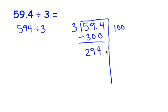Let's take out 60 groups of 3. 60 times 3 is 180. Subtract.